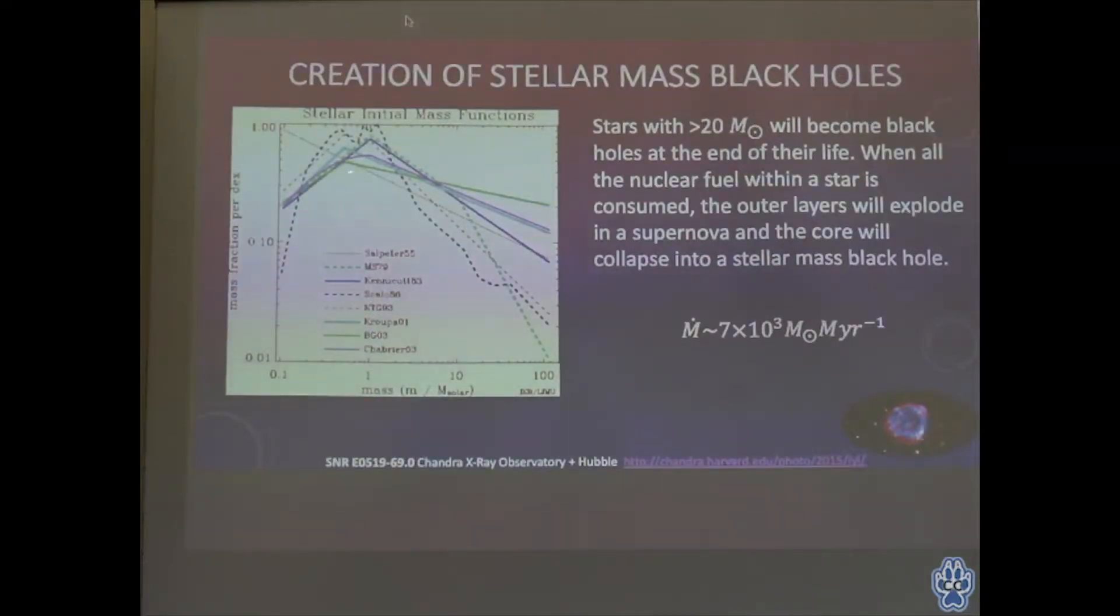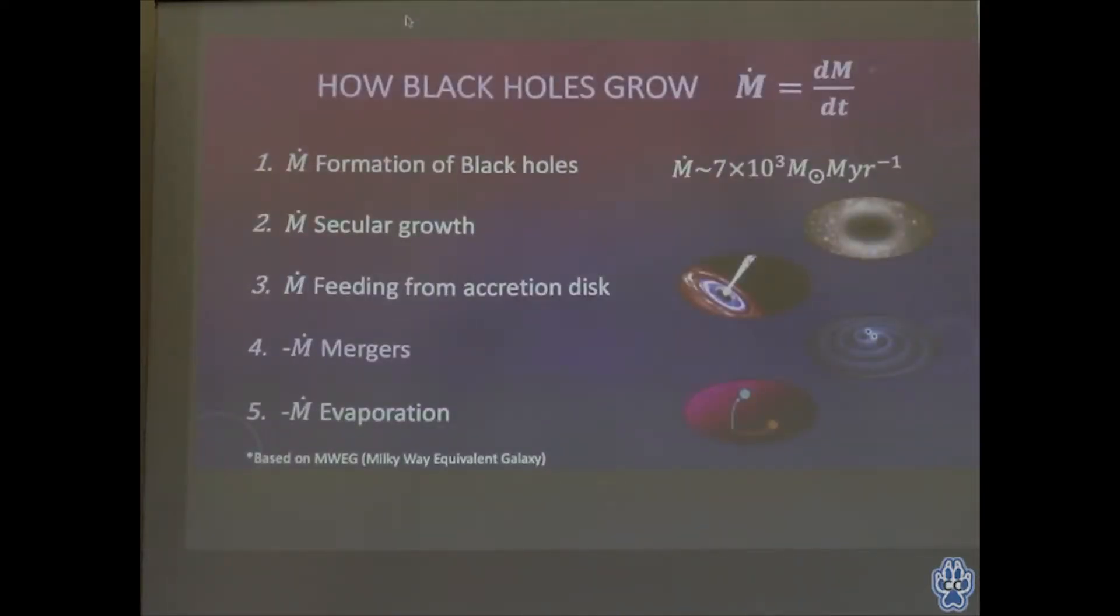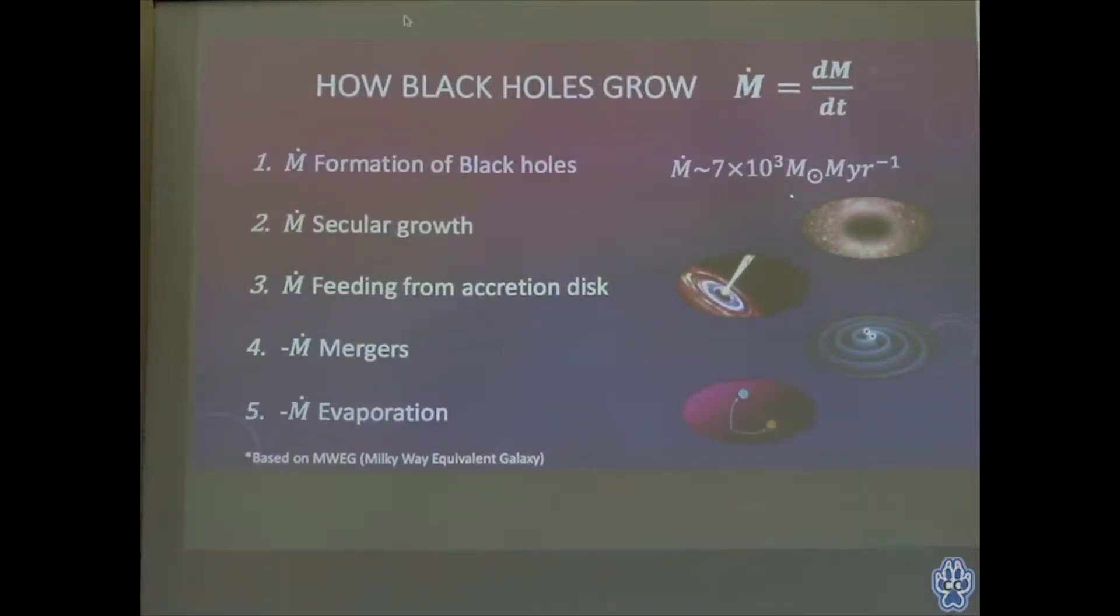It's actually a relatively fewer number of stars compared to lighter mass ones. By looking at literature, we made a rough estimate that about 7,000 solar masses of new black hole are created every million years in the Milky Way galaxy.